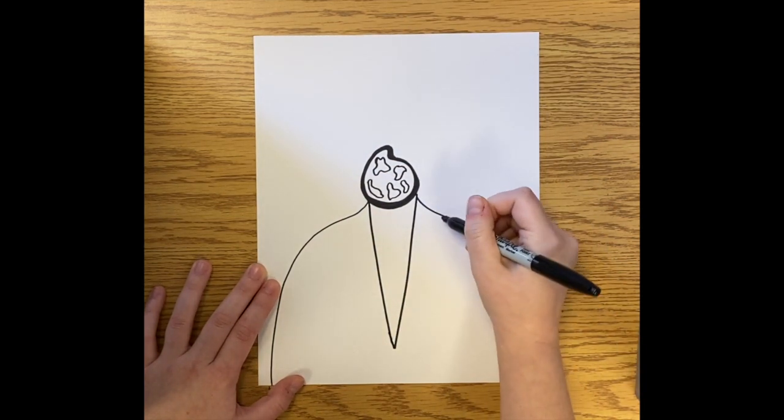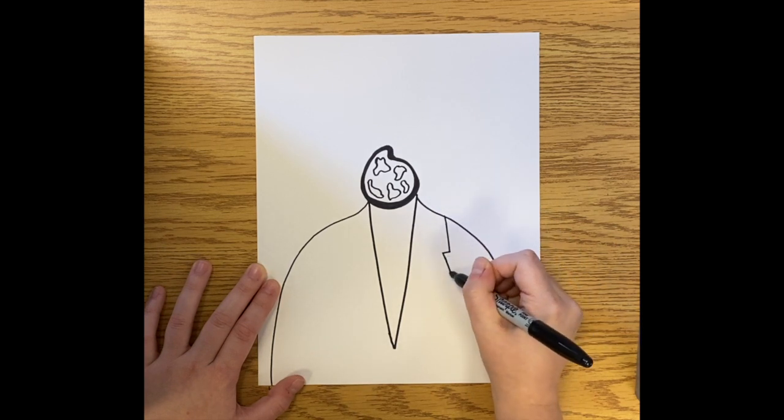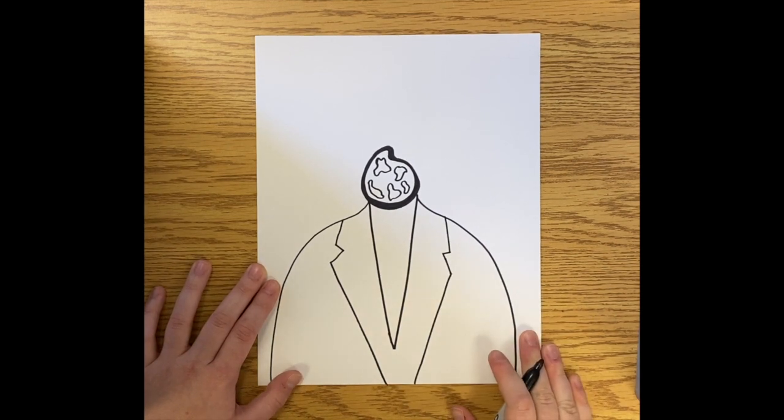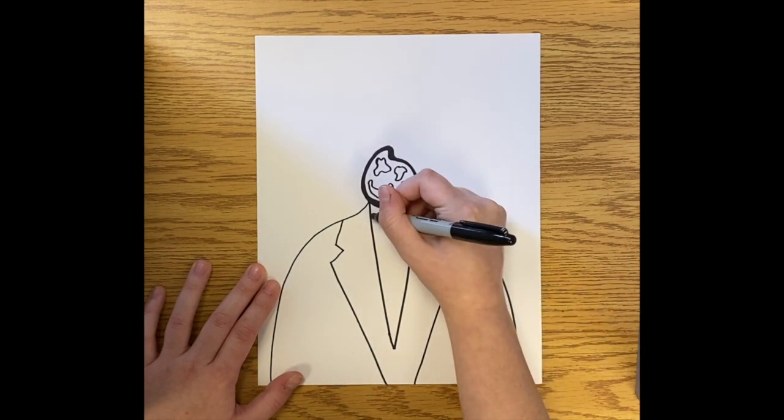So you do the body, the neck, the suit and the tie, and then add the hat and the face behind the paint palette.